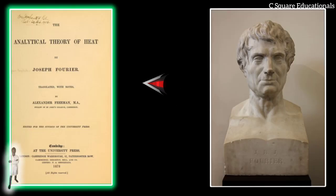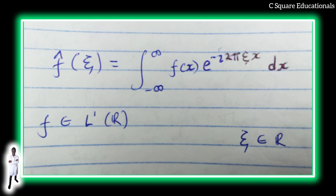The Fourier transform can be formally defined as an improper Riemann integral, making it an integral transform, although this definition is not suitable for many applications requiring a more sophisticated integration theory.